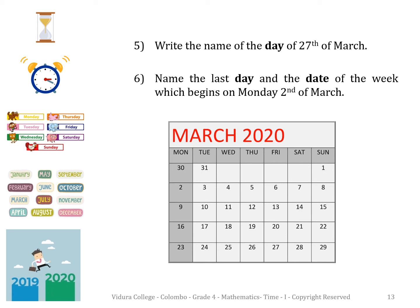Question 5: Write the name of the day of the 27th of March. Question 6: Name the last day and the date of the week which begins on Monday, 2nd of March. Children, did you write down the answers? Okay, let's check the answers now. Question 5 answer: Friday. Question 6 answer: Sunday, 8th of March 2020.